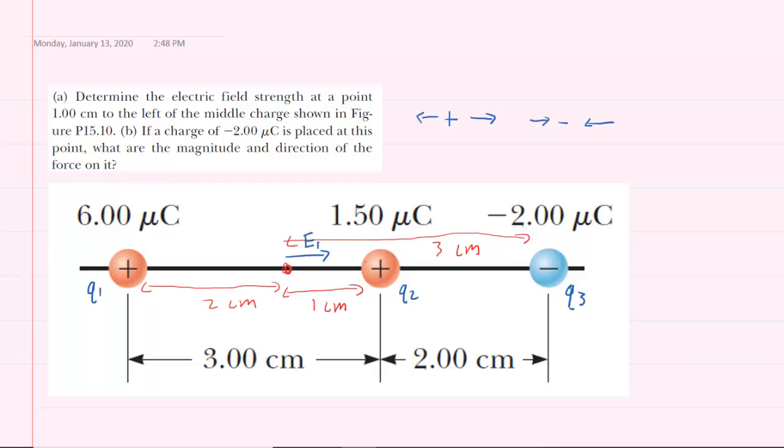Now q2 is also positive, so that means E2 will point away from that positive charge, but you'll notice that away from that positive charge will actually be to the left. So we would write E2 in that direction. Finally, E3 is produced by a negative charge, so it should point towards that negative. Therefore, we would have an electric field vector pointing towards the negative, and we would label that E3.